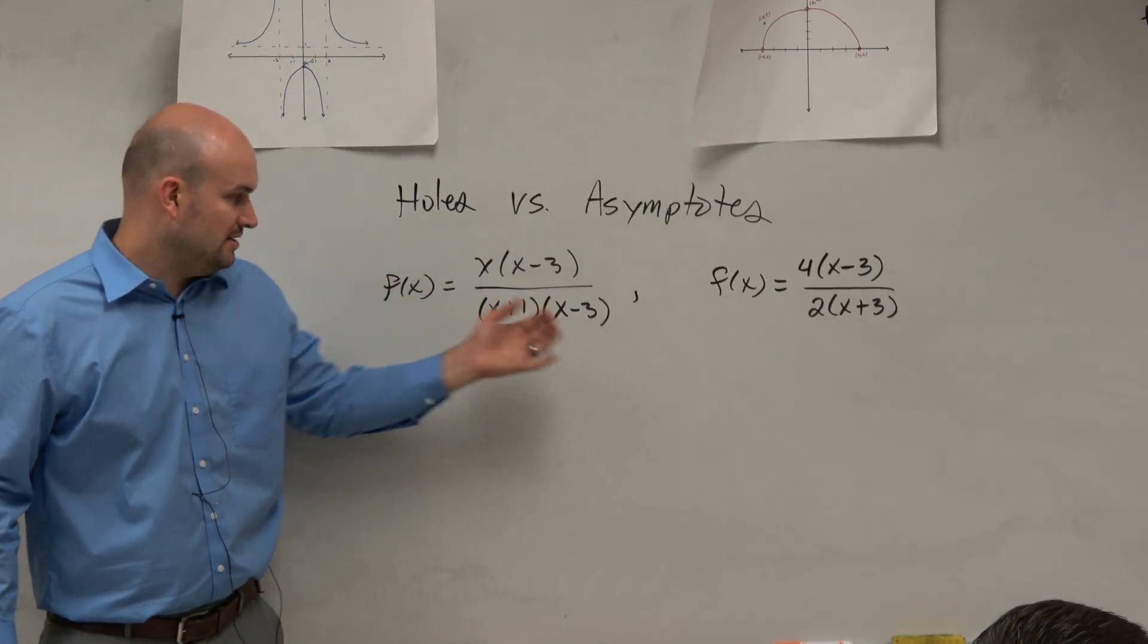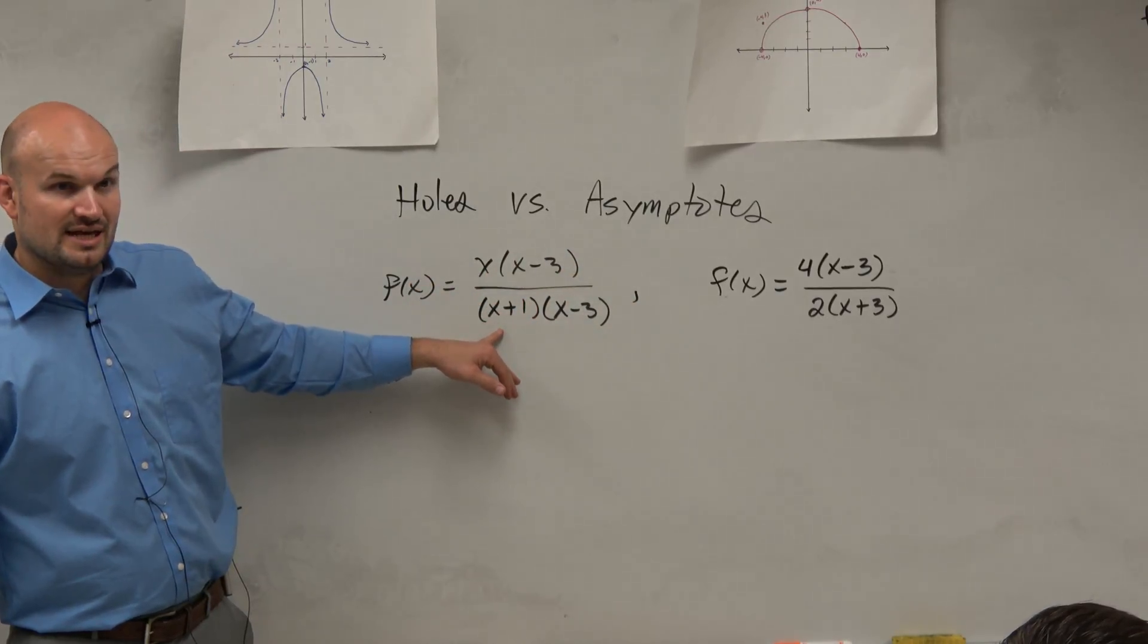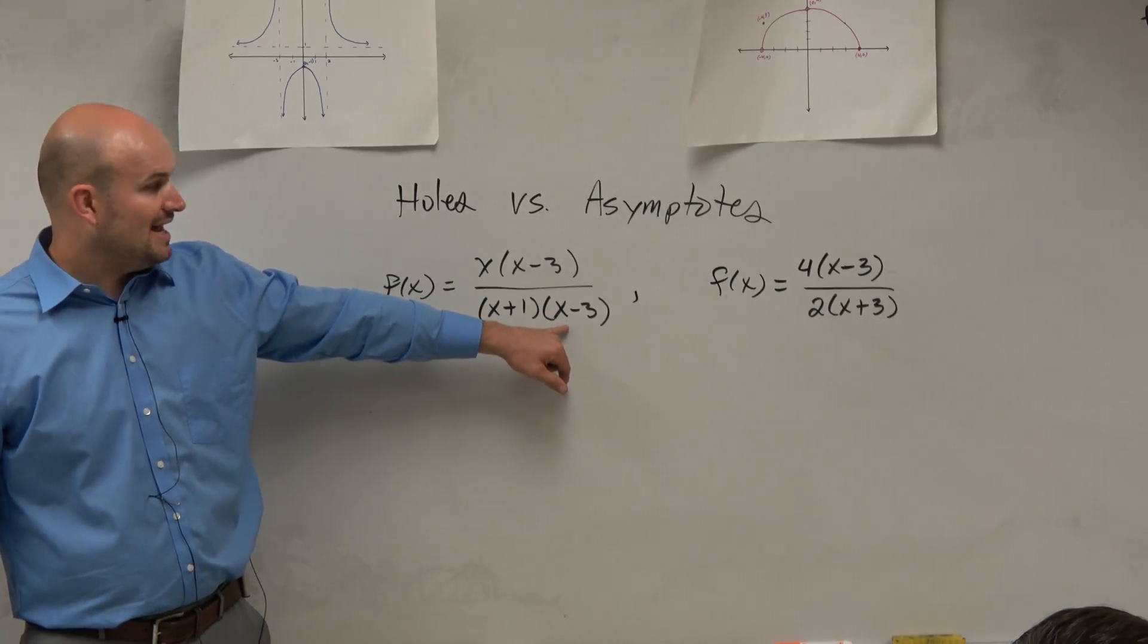So how do we know, then, if our discontinuity at negative 1, is that a hole or is that a jump? Our discontinuity at negative 3,